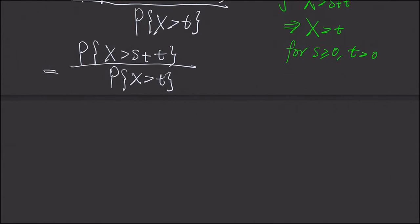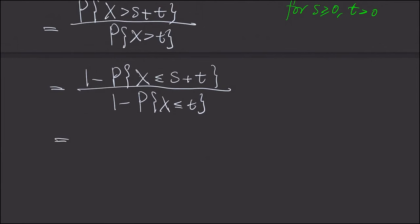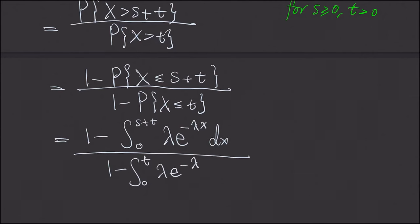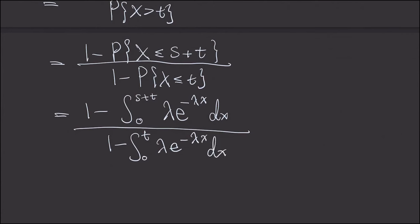And now we just apply the exponential distribution formula. And we convert this probability to 1 minus X is less than s plus t, and the bottom is 1 minus X is less than or equal to t. Which is, we compute the integral of, from 0 to s plus t, lambda e to the minus lambda x dx.